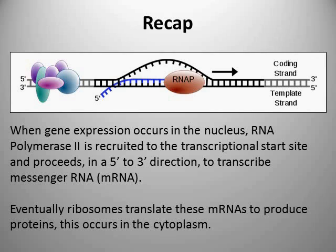Once this messenger RNA has been fully transcribed, it needs to make its way into the cytoplasm where it's eventually bound by ribosomes and translated into protein. What we're going to be talking about today is everything that happens between the onset of transcription and up to the point where the ribosomes get hold of the mRNA and start making it into protein. You may have just thought that mRNA gets produced and somehow gets out of the nucleus where it gets made into protein, but there's a whole raft of modifications and mechanisms which need to act on the mRNA before it can actually be used to generate proteins in the cytoplasm.